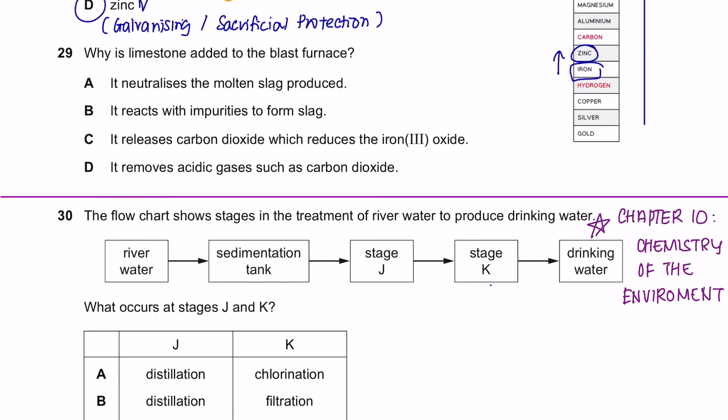Question 29. Why is limestone added to the blast furnace? This is one of the steps that is taken place from the extraction of hematite. Limestone is also known as calcium carbonate whereby it is added into the furnace to remove impurities in the ore.